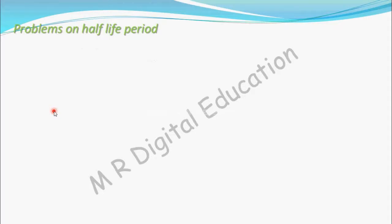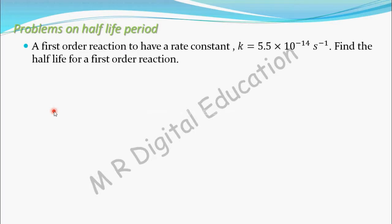Let's see a problem on half-life period. A first-order reaction has a rate constant k equal to 5.5 times 10 to the power minus 14 per second.